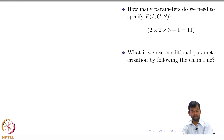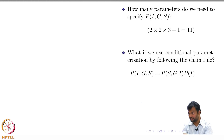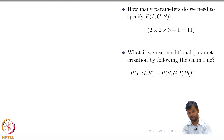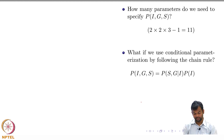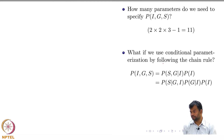Now, what if we use conditional parameterization? We start with the chain rule: the joint distribution factorizes into conditionals and marginals. P(I, G, S) = P(I) · P(S|I) · P(G|I, S). This is a conditional joint distribution — the chain rule keeps factorizing. Can we simplify further?